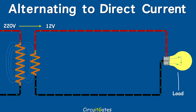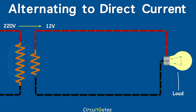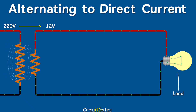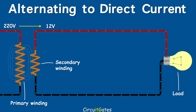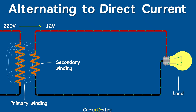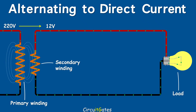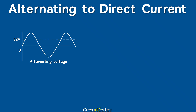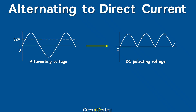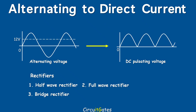However, the load resistance will then determine the current through it with respect to the applied voltage. A transformer has two windings: the primary winding and the secondary winding. When stepping down the voltage, the secondary winding is made to have fewer turns than the primary winding, depending on the level of stepping down. After stepping down the voltage, we then convert alternating voltage to DC pulsating voltage using a rectifier. There are several types of rectifiers: half-wave, full-wave bridge, and silicon-controlled rectifiers.